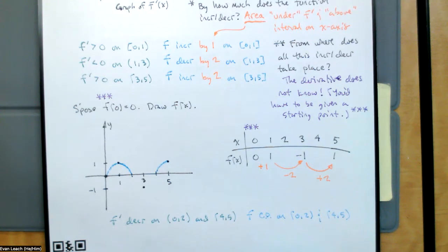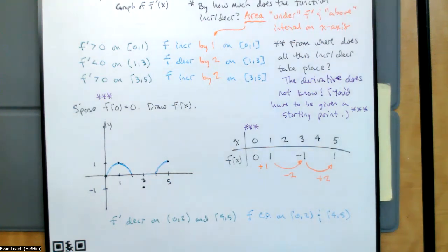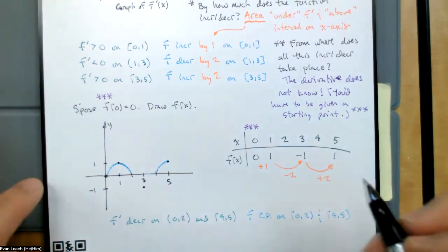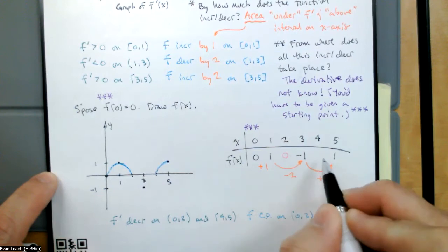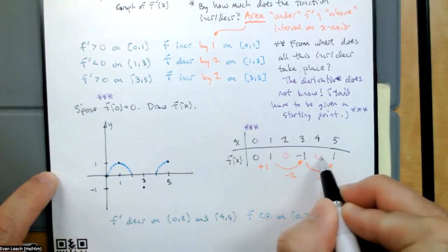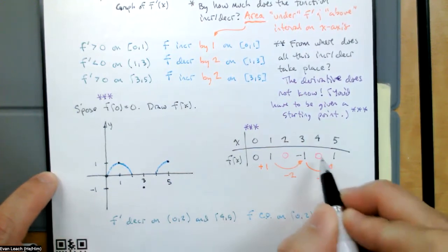Clearly, I filled in some additional information. Somehow I know that f of 2 is equal to 0 and f of 4 is equal to 0 as well.